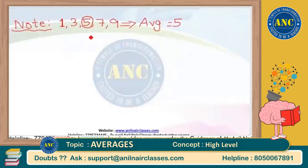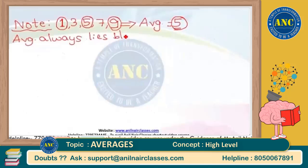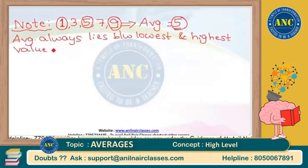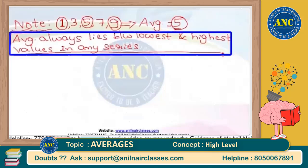For this series, the average is 5. Can I easily say that my lowest term in the series is 1, my highest term is 9, and my average is 5? Can I say that the average always lies between the lowest and highest values in any given series? This is a very very important key point: the average always lies between the lowest and highest values in any given series.